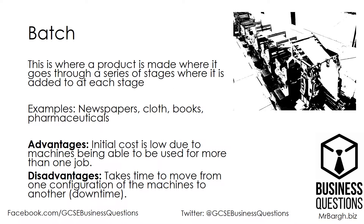Next up is batch production. This is where a product is made going through a series of stages where it is added to at each stage. Examples include newspapers, cloth, books, and pharmaceuticals.